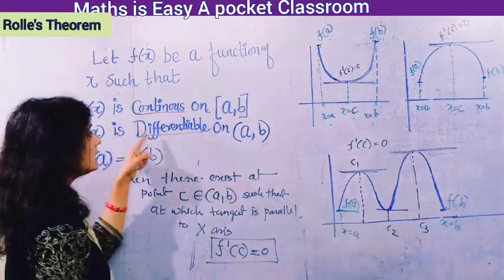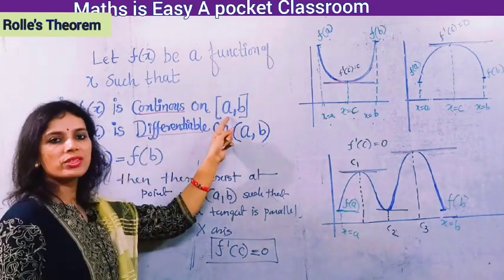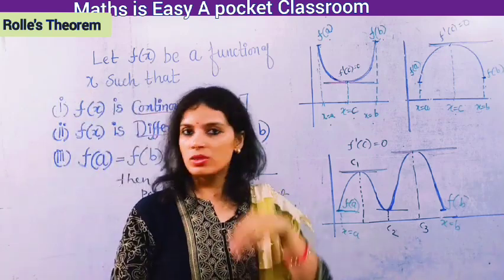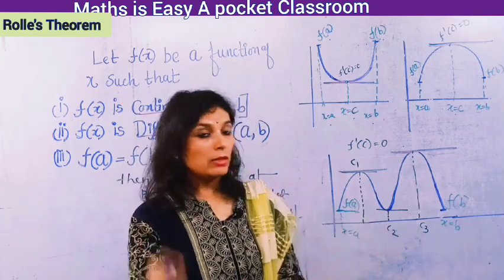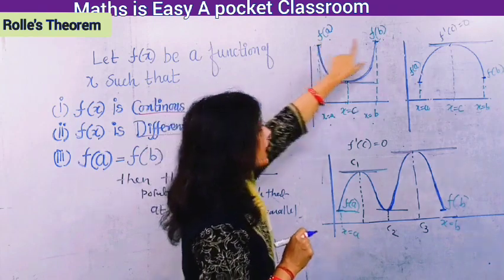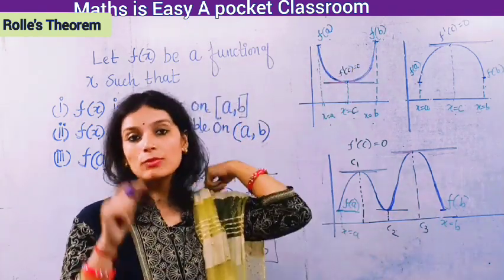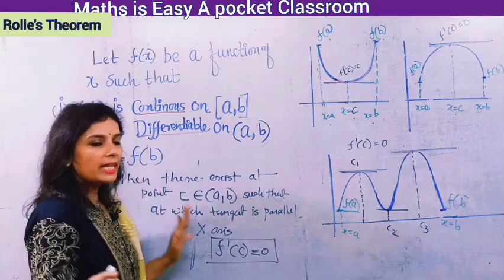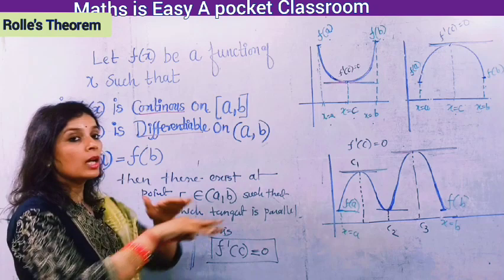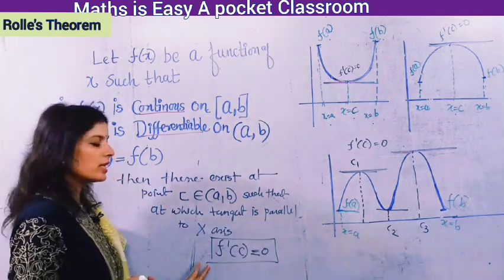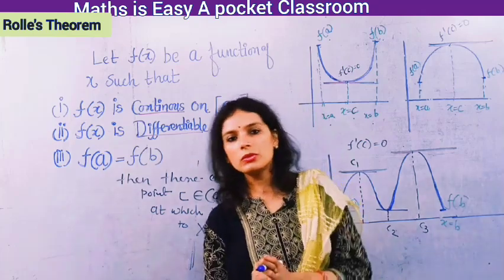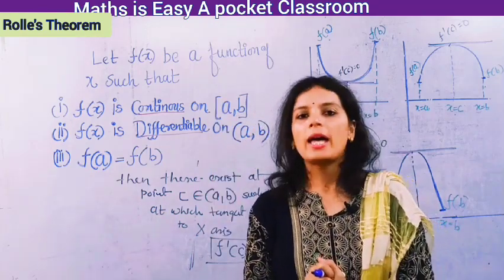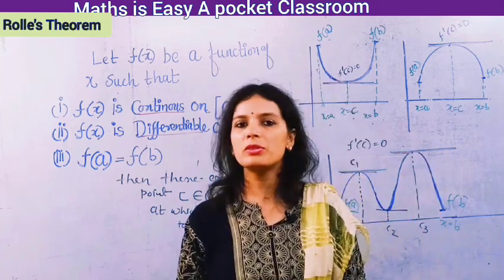If any function satisfies these three conditions — first, f(x) is continuous on the closed interval giving a smooth curve; second, f(x) is differentiable on the open interval (a, b) with no peak points; and third, f(a) = f(b) — then there exists a point c in (a, b) such that f'(c) = 0. This is Rolle's theorem.